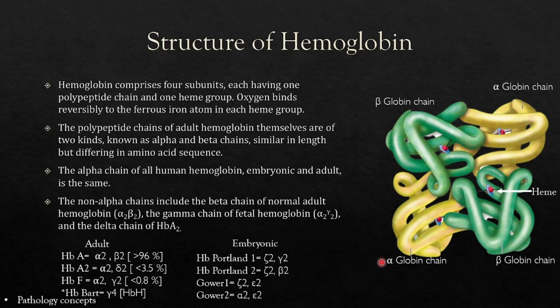Structure of hemoglobin: hemoglobin comprises four subunits, each having one polypeptide chain and one heme group. Oxygen binds reversibly to the ferrous ion atom in each heme group. The polypeptide chains of adult hemoglobin are of two kinds known as alpha and beta chains. They are similar in length but different in amino acid sequence.